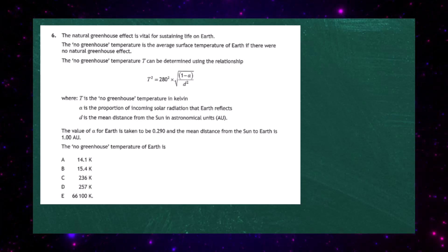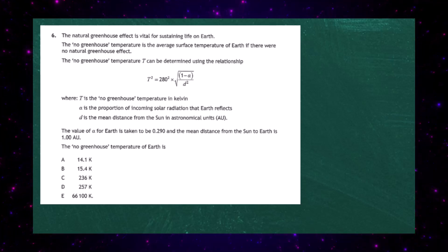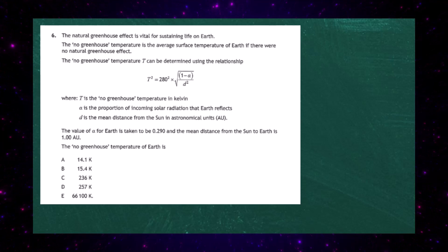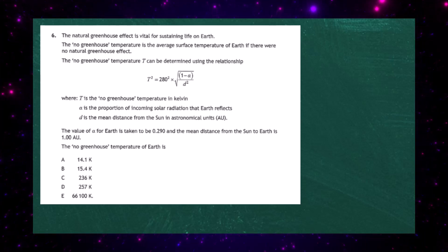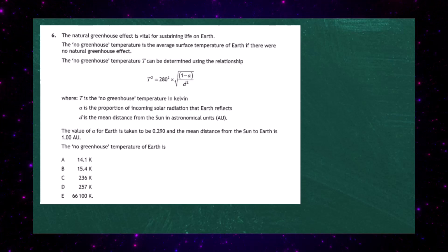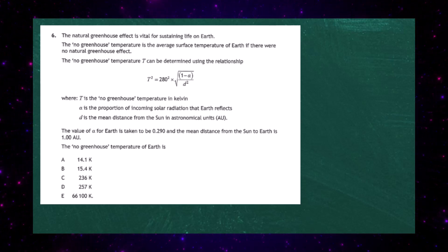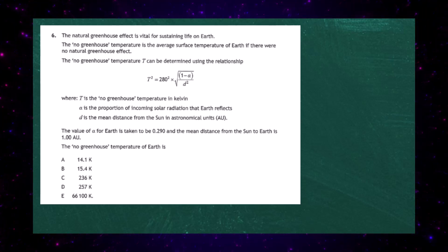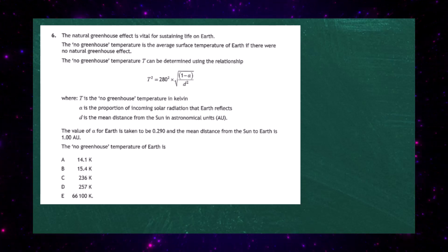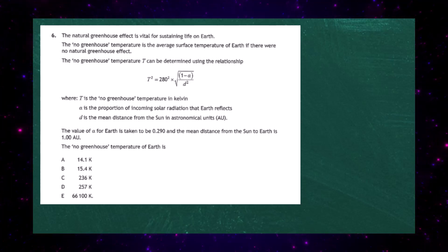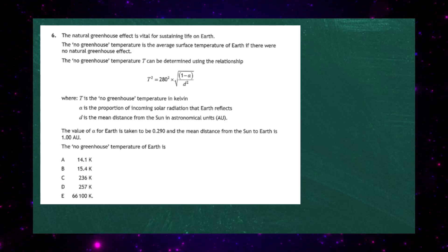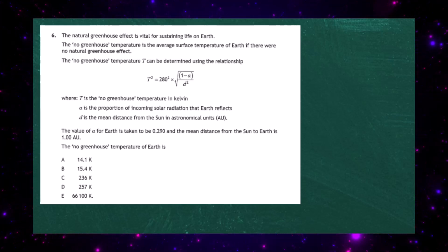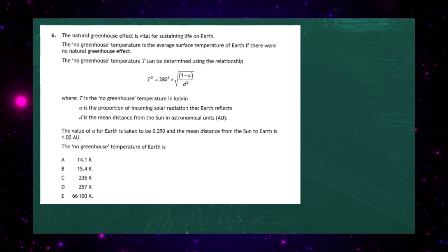The no-greenhouse temperature is the average surface temperature on Earth if there were no natural greenhouse effect. The no-greenhouse temperature T can be determined using the relationship: T² = 280² × √(1 − α) / d², where T is the no-greenhouse temperature in Kelvin, α is the proportion of incoming solar radiation that the Earth reflects.